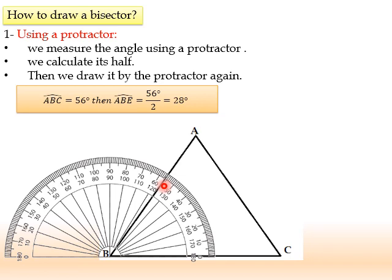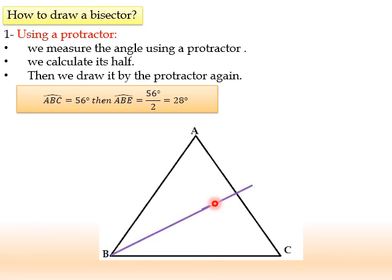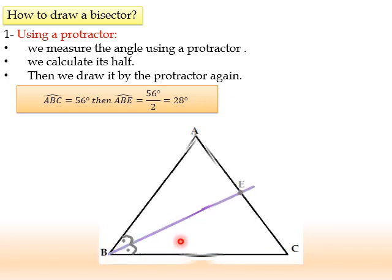Since 56 divided by 2 is 28, so by using our protractor, here is 20 and 8 dashes. At this point, I can draw the semiline, which is called the bisector of the angle. Okay? This bisector cuts the angle into two equal angles. So, I can clearly say that ABE equal to EBC equal to 28 degrees.